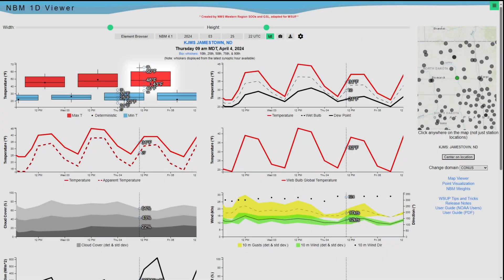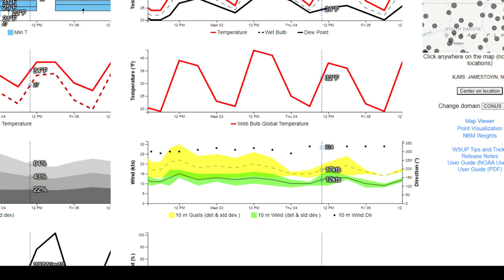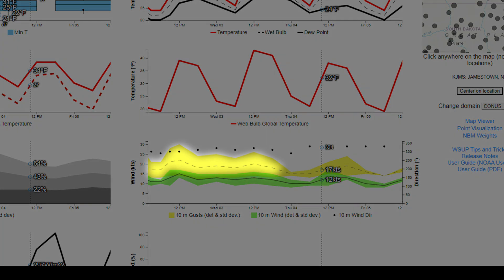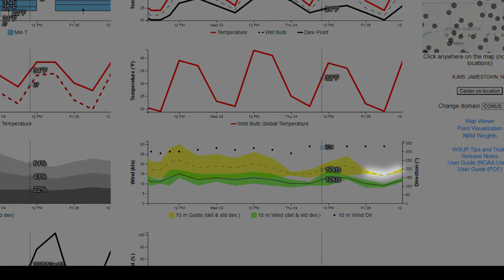One other side note to take away from this 1D viewer graphic is that you can also see standard deviation with respect to time. The bottom right graph with the 10 meter wind speed and gust has the standard deviation range plotted in time, so you can see areas where there is quite a bit of spread among ensemble members with a large standard deviation, and other areas where there is decent agreement with a low standard deviation.